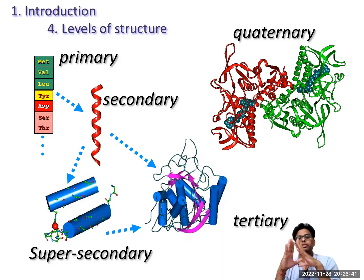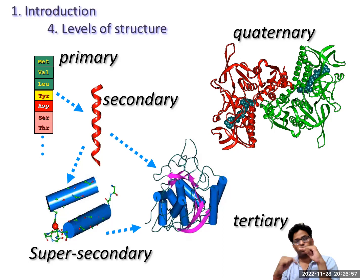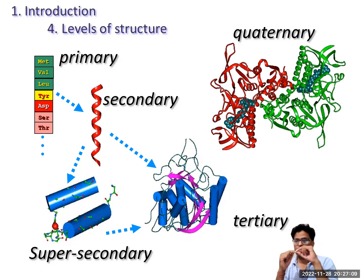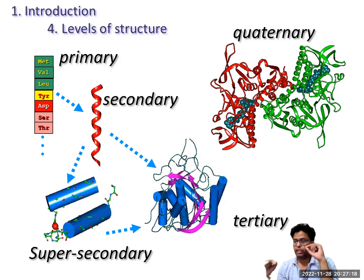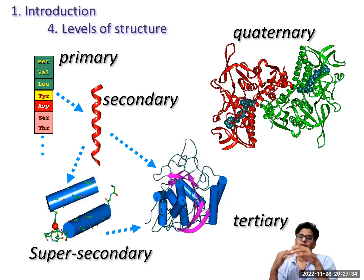Alternatively, if the first amino acid bonds with the 15th, the second with the 16th, the third with the 17th — forming hydrogen bonds between distant parts of the chain — they create a sheet-like structure. If these amino acids are in the same orientation it is called parallel beta sheet; if they are opposite it is called anti-parallel beta sheet.